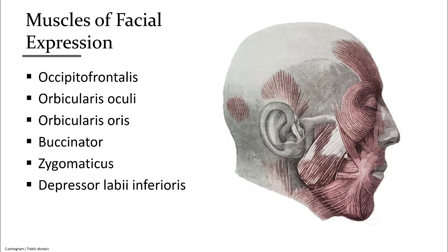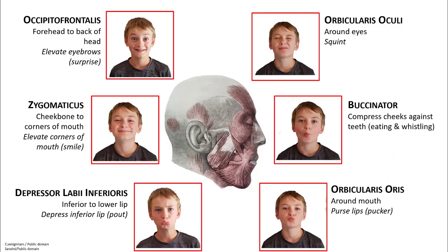Then there's depressor labii inferioris, which is responsible for lowering your lower lip, located underneath the orbicularis oris muscle. We can see the facial expression each of these muscles makes: occipitofrontalis for a surprise look, zygomaticus for a smile, depressor labii inferioris for a pouty face, orbicularis oculi for squinting or winking, buccinator for compressing the cheeks while eating or whistling, and orbicularis oris for a pucker.